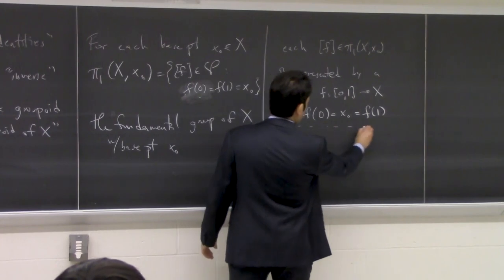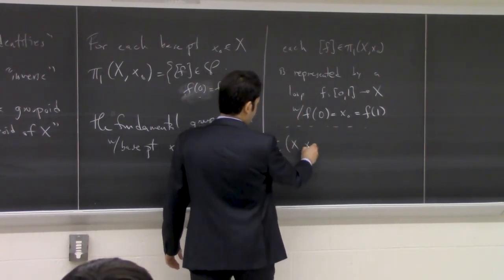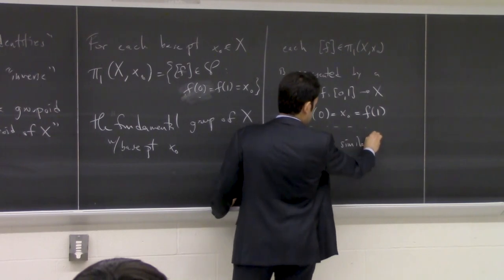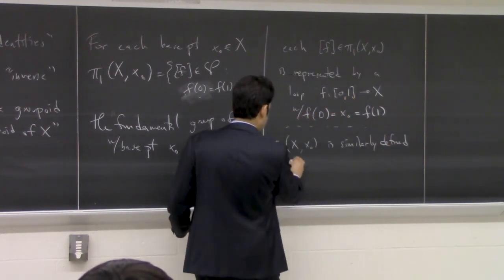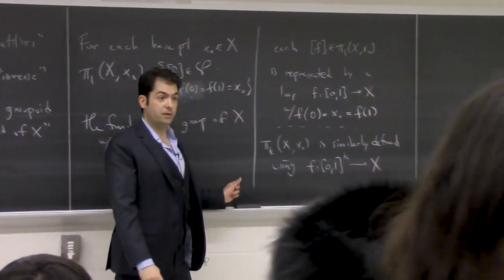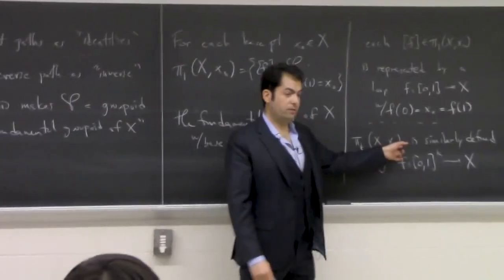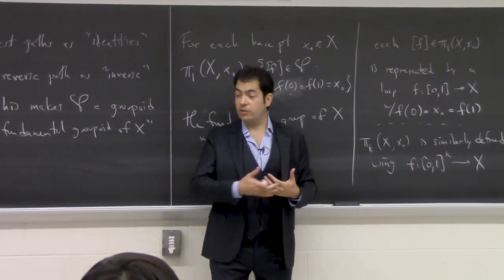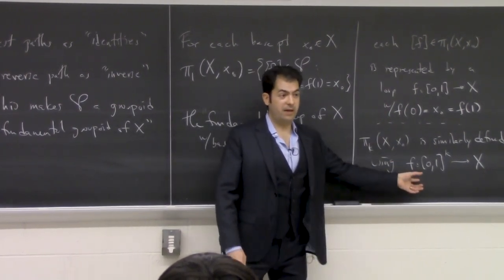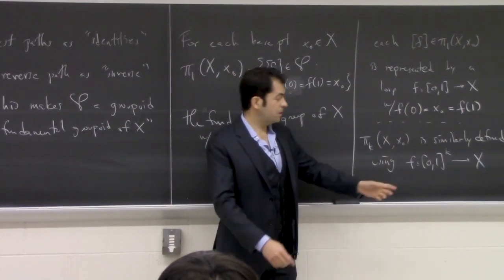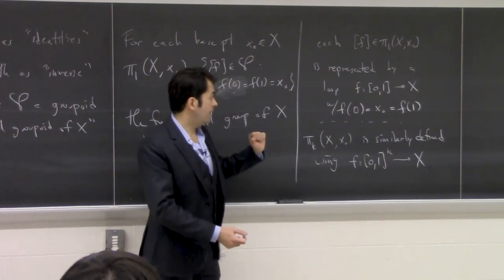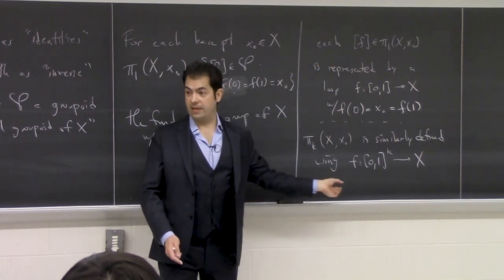Not to keep you in suspense: πₖ is similarly defined using maps from the k-dimensional cube to x, where the whole boundary gets mapped to this base point. Then you look at continuous families — homotopies — but the homotopy is relative to the boundary, so all of the boundary always gets mapped to the single point x₀. Equivalently, if you take the cube and identify all of the boundary to a point, you get a sphere of the appropriate dimension. So it's just homotopy classes of maps from the circle s¹, or from the k-dimensional sphere sₖ.